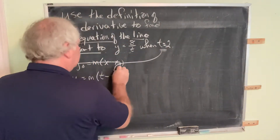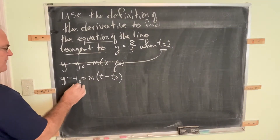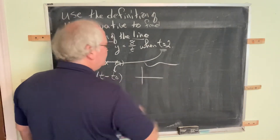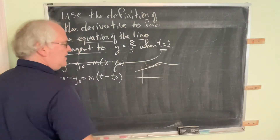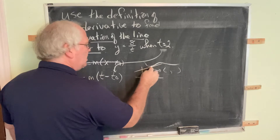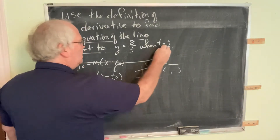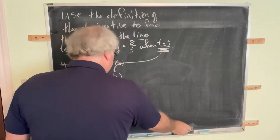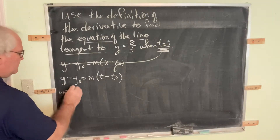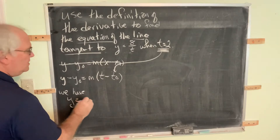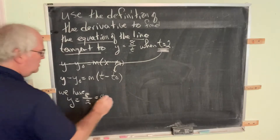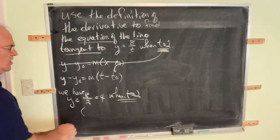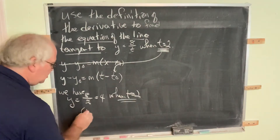We have t equals 2. We find the y-coordinate by substituting t equals 2 into the original function. To find the coordinates of a point on the curve, you take the given t value and substitute it in. So y equals 8 over 2, which equals 4, when t equals 2. The point on the curve and on the tangent line is (2, 4).